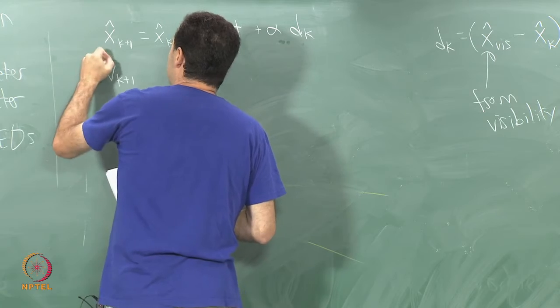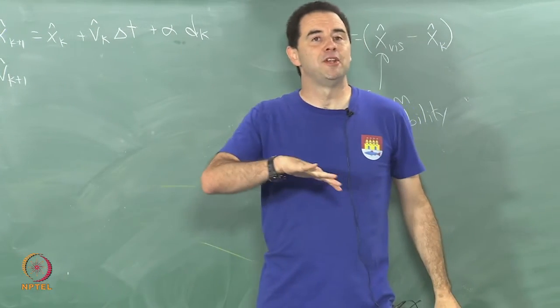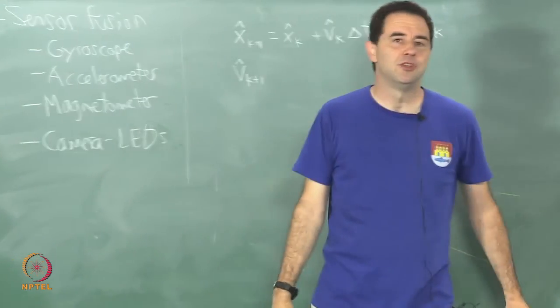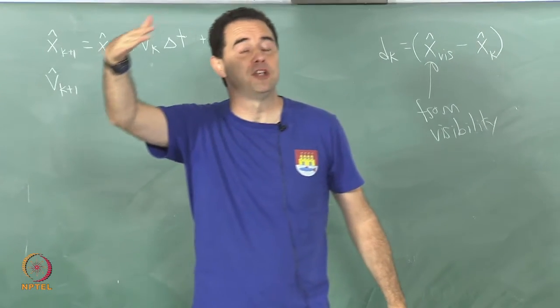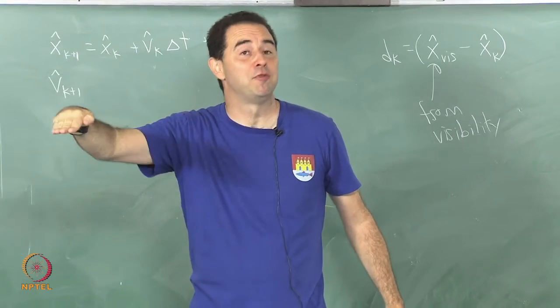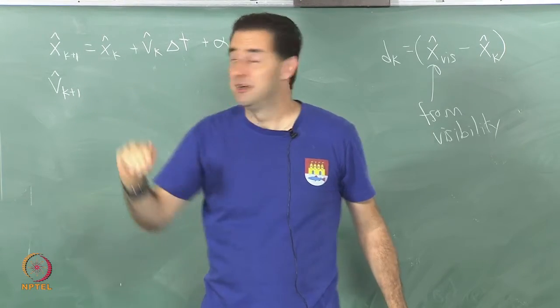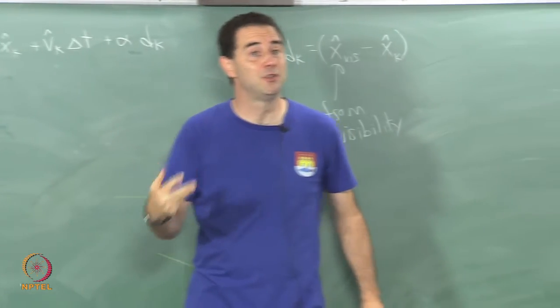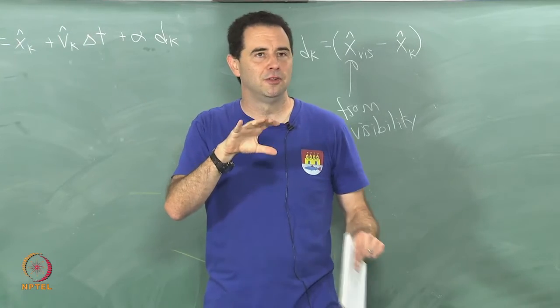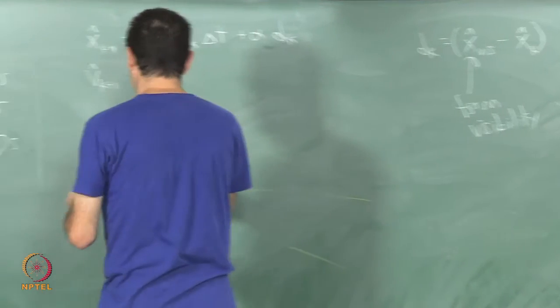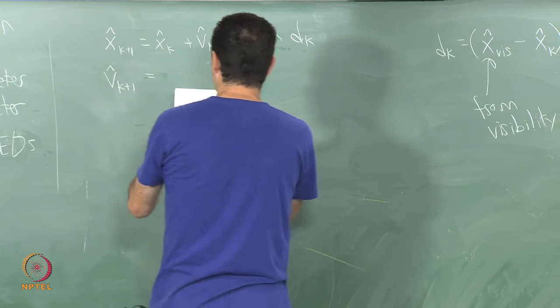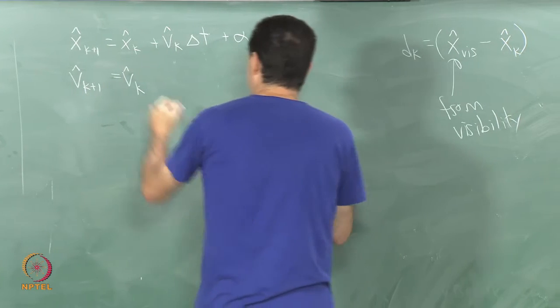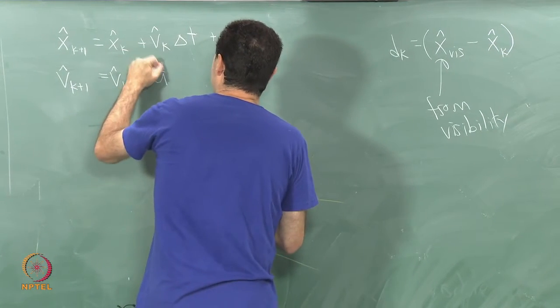My filter now has to keep track of an estimate of both the position and the velocity. If you remember the filter in the original orientation only case, it was directly estimating the orientation and a sensor was providing the angular velocity. Now, I have a filter that is estimating position and velocity and I have a sensor that is going to be providing the acceleration directly which is the leftover component of linear acceleration as measured by the accelerometer. Just trying to give a little bit of a feel for what goes on at this stage, but I am not going to be covering all the details.